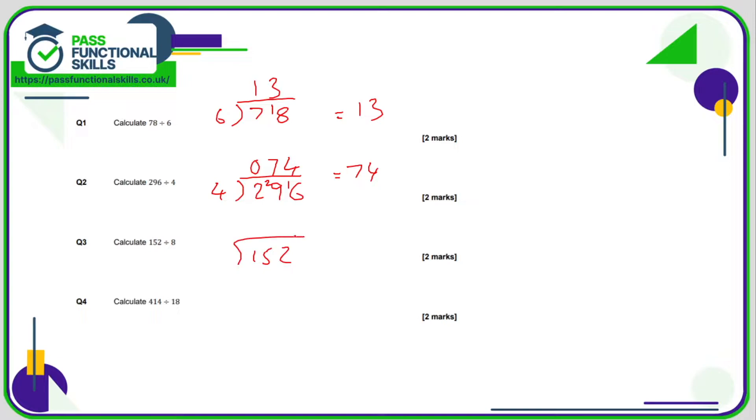152 divided by 8. 1 divided by 8 can't be done, so 0, carry the 1. 15 divided by 8 is 1 with a remainder of 7. And 72 divided by 8, well if you've got good times tables, you'll know that's 9. So the answer is 19.